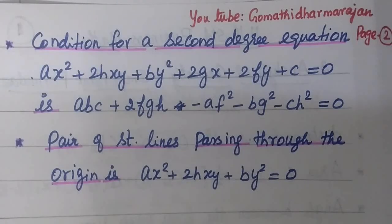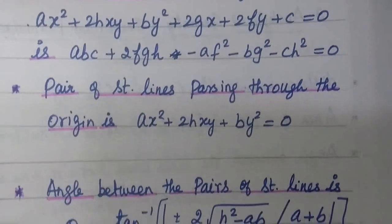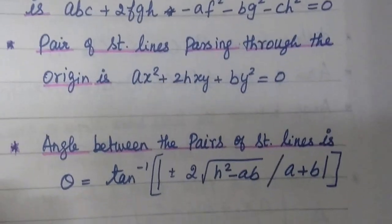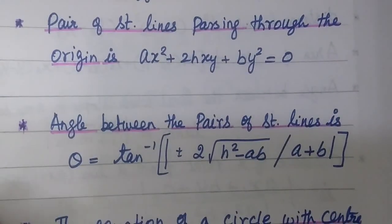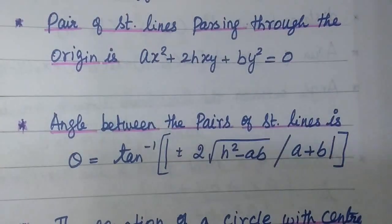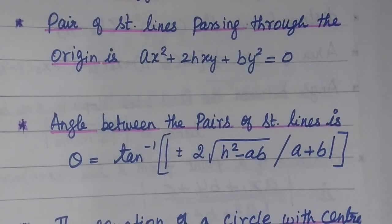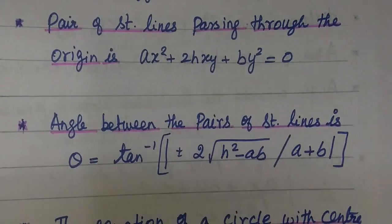When the pair of straight lines passes through the origin, g and f are zero. So the equation becomes ax squared plus 2hxy plus by squared equal to 0. The next one is the angle between the pair of straight lines — note: it is a pair of straight lines, not individual lines.